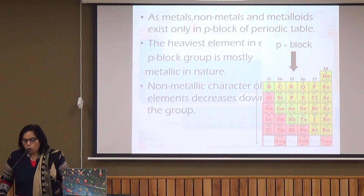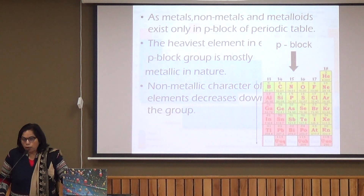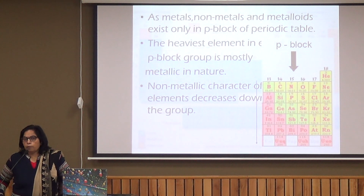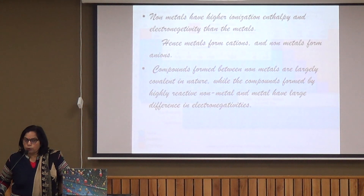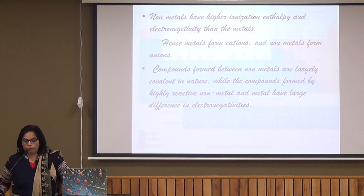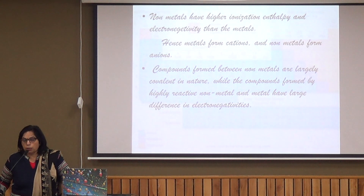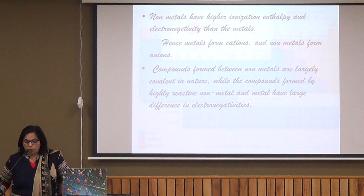Metals, non-metals, and metalloids are all present in P-block. Metals have bigger size, non-metals have small size, and metalloids have intermediate size. Non-metals have higher ionization energy and high electronegativity because, along a period, atomic size decreases, so electronegativity increases. In a group, size increases, so these properties decrease.